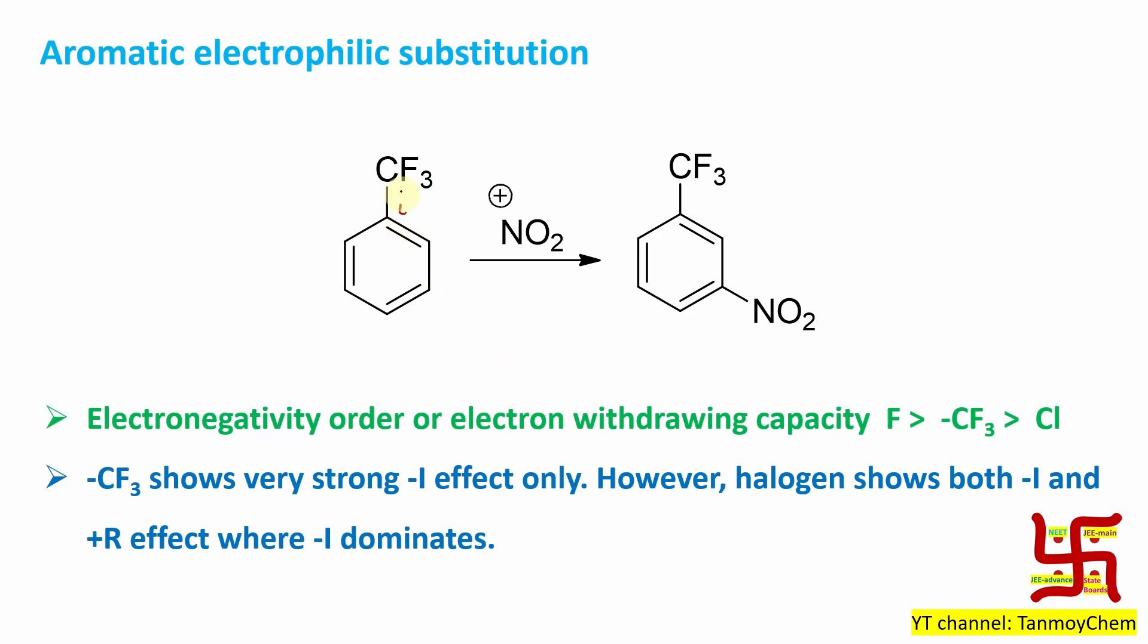By the way, nitration will take place at the meta position. So you'll have a meta nitro trifluorotoluene. Question is why? Actually, this CF3 is a strongly electron withdrawing group through sigma bond.